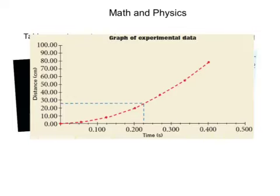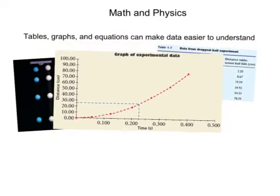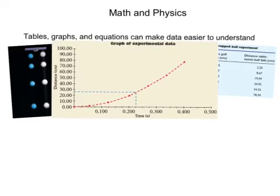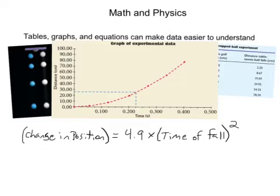The next step would be to take this graph and the information we get from it and come up with some sort of mathematical representation showing us the relationship between distance the balls have fallen and time. When we do that, we end up getting an equation, something like this, where our change in position is equal to 4.9, this 4.9 constant, times the time of fall squared. That's what we're going to do with graphs - figure out ways to use the mathematical representation shown in that graph to make more sense.